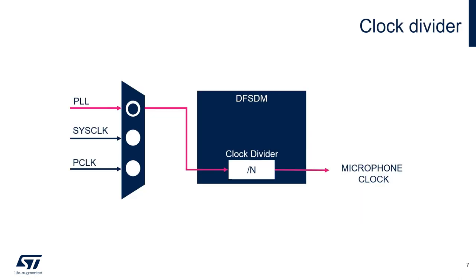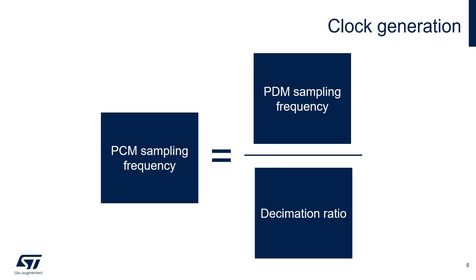The DFSDM peripheral has a clock input which may come from a PLL, from the system clock, or from the peripheral clock. The internal clock divider rescales this input clock and defines the actual frequency provided to the microphones. The oversampling parameter defines the decimation ratio to be used in the conversion. The output sample rate of the PCM signal will be equal to the clock provided to the microphones divided by the decimation ratio.